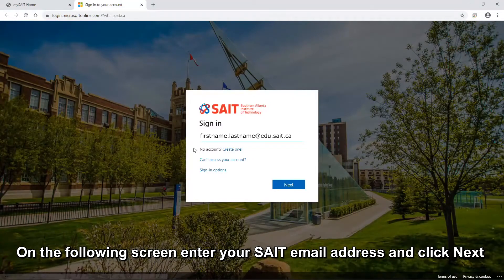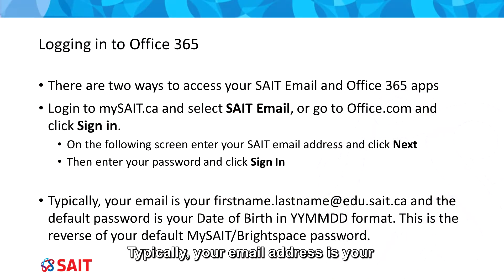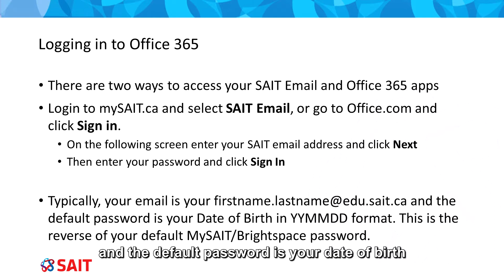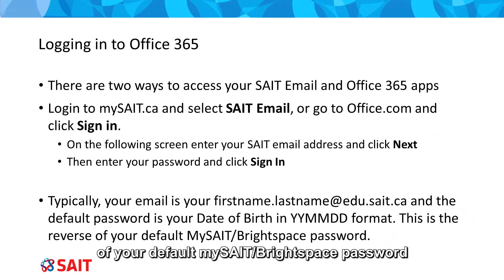On the following screen, enter your SAIT email address and click Next. Then enter your password and click Sign In. Typically, your email address is your firstname.lastname@edu.sait.ca, and the default password is your date of birth in year-year, month-month, day-day format. This is the reverse order of your default MySAIT or Brightspace password.